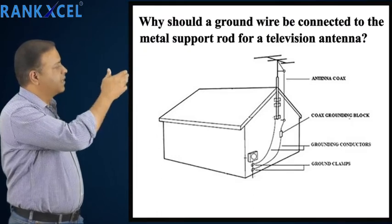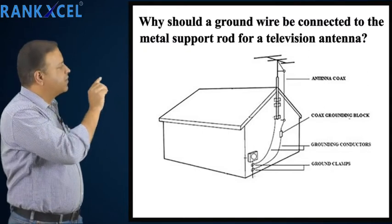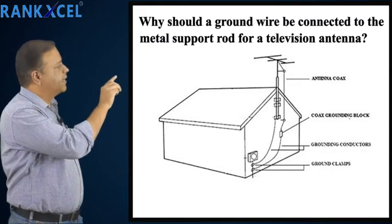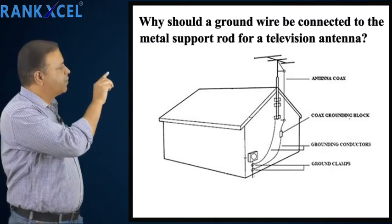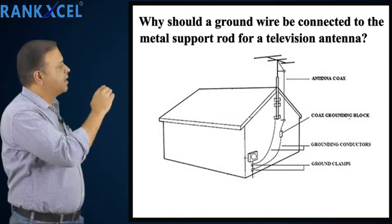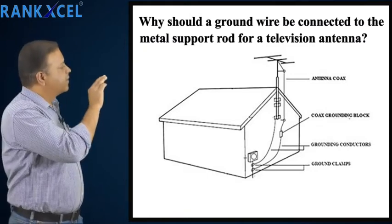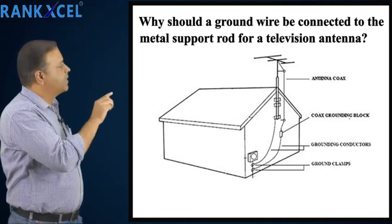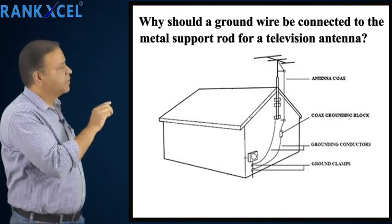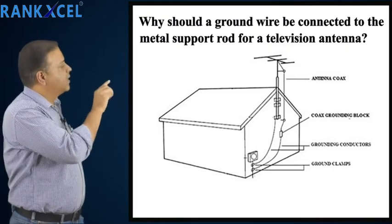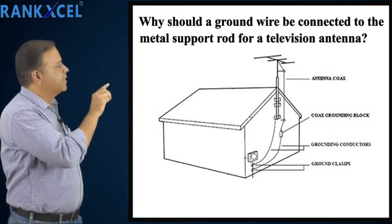If the antenna were not grounded, the electric charges in the atmosphere during a storm could place the antenna at a high positive or negative potential. That voltage reaches the television and damages it.